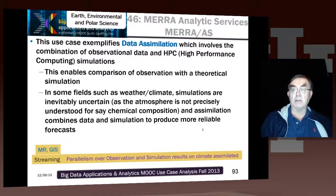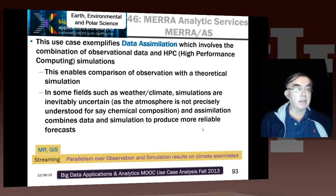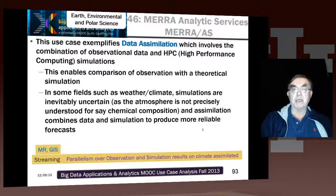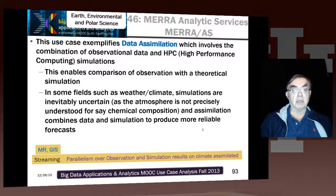This idea underlies all of big data: we have lots of sources of data and need to do giant least squares fits, combining all sources to get the best possible result. It's not always simple least squares — sometimes it's sophisticated machine learning. But in the case of data assimilation, it's typically done by a chi-squared style least squares fit, using things called Kalman filters involved in this type of work.